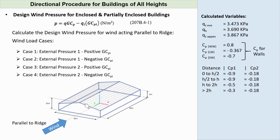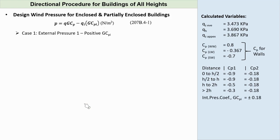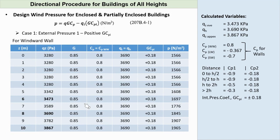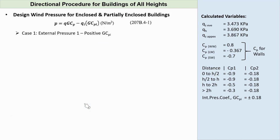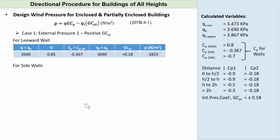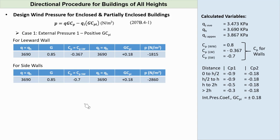We also have four loading cases for wind acting parallel to ridge. For Case 1, External Pressure 1 minus Positive GCPI, tabulated results for windward wall pressure are evaluated at 0 to 10 meters, using Q equal to QZ, G constant at 0.85, CP equal to 0.8, QI equals QH, and GCPI equals positive 0.18. For the leeward wall, using Q equals QH and CP equal to negative 0.367, we get P equals negative 1,815 pascals. For the side wall, using CP equal to negative 0.7, we get P equals negative 2,860 pascals.